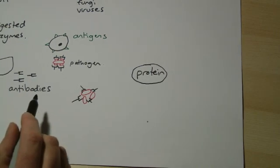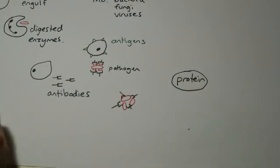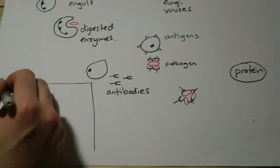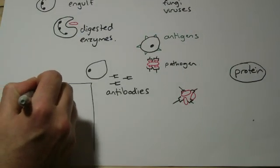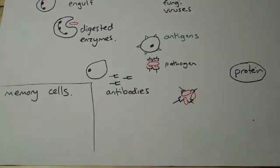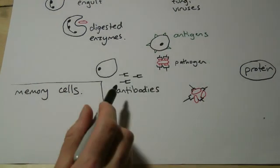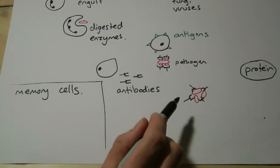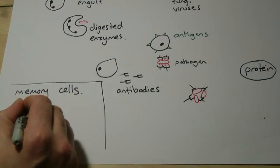Now, after you've had an infection, some of these white blood cells that produce the antibodies will remain behind, and they're called memory cells. The next time you come across this pathogen, the memory cells are already there.